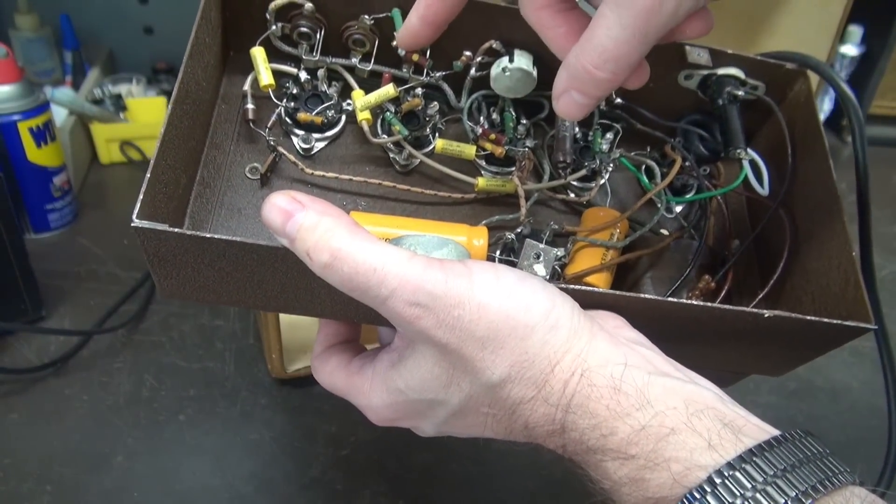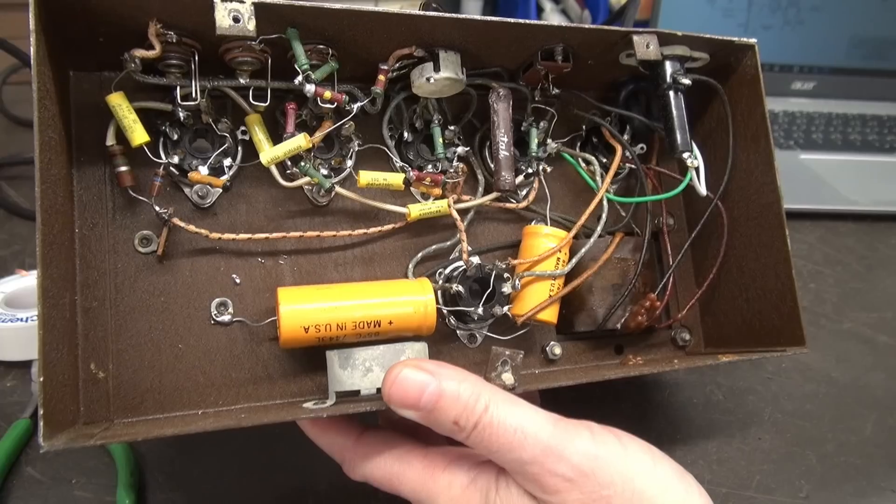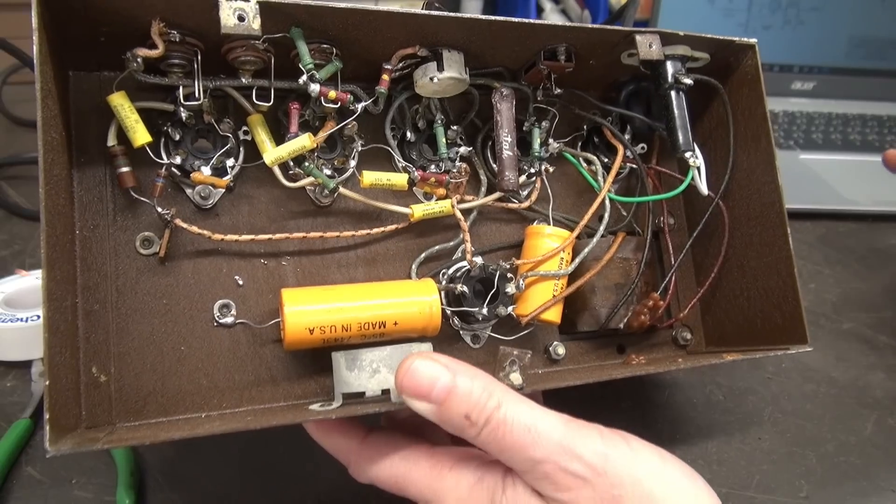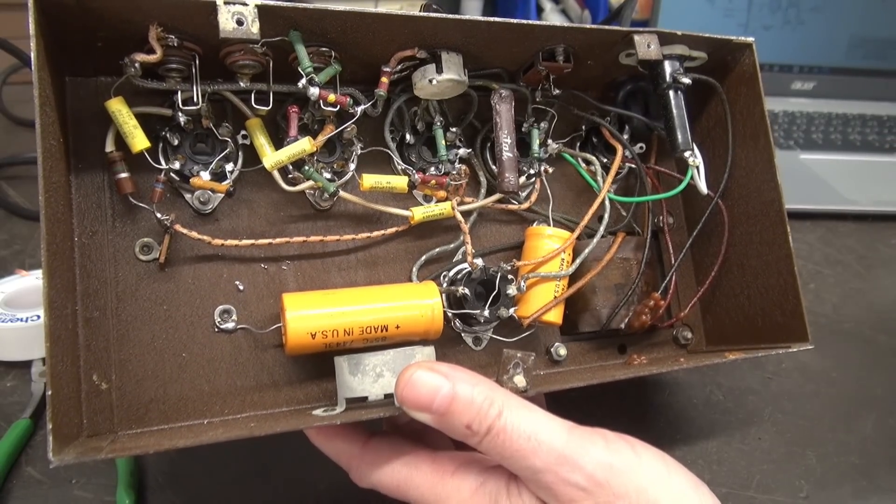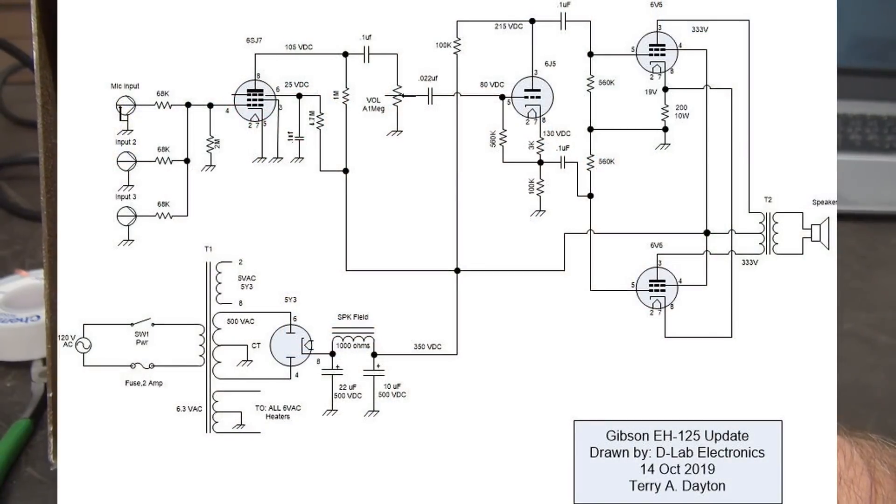So I'm going to move that wiring over, do some minor changes, and let's retest it. All right, so I'll cut to the new schematic so you can see what this modification is. Pretty much, though, we're going to take the three input jacks. They're going to go through 68K resistors, and they're going to land on pin 4, which is the input to the 6SJ7.